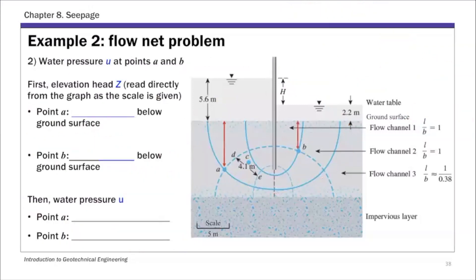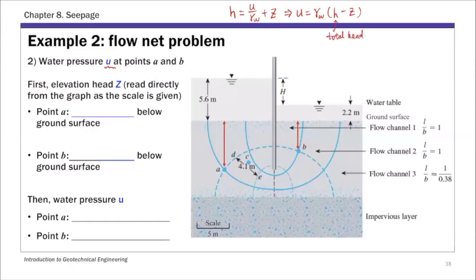Part two asks for water pressure U at these two locations. To calculate water pressure, we use Bernoulli's equation. The total head consists of the pressure head u over gamma_w plus the elevation head z. From this expression, pore pressure U equals gamma_w times (h minus z), where h is the total head we just calculated in part one, and z is the elevation head.